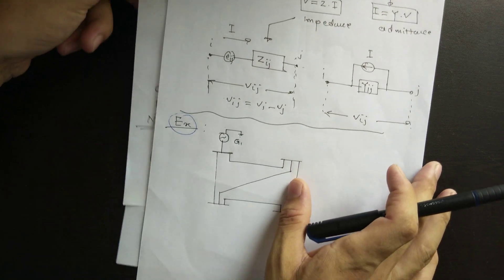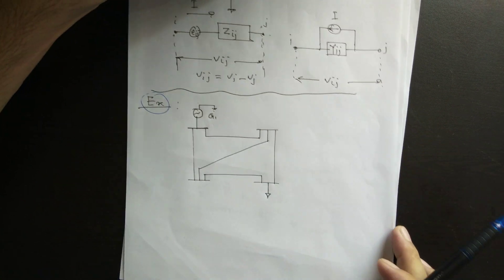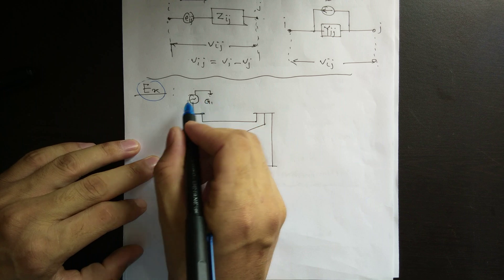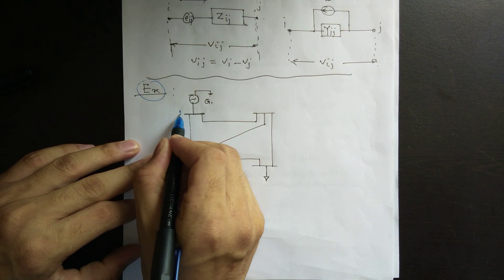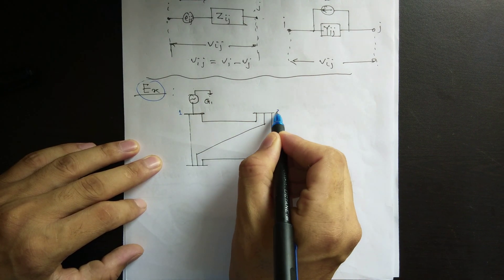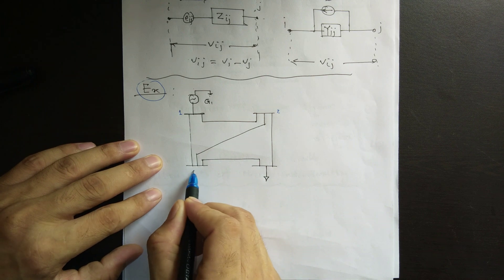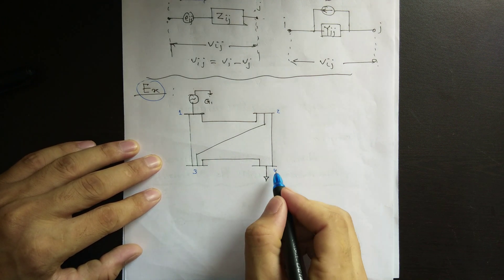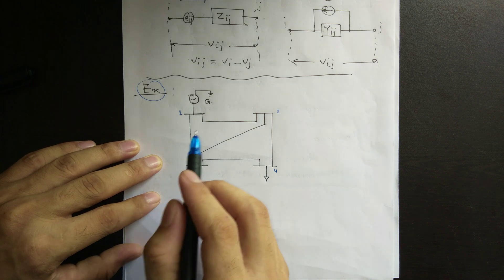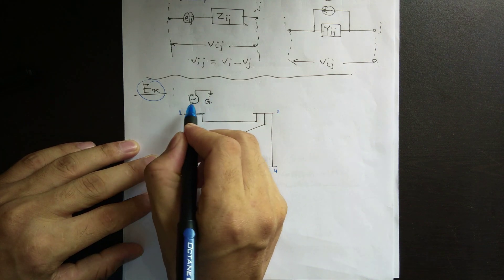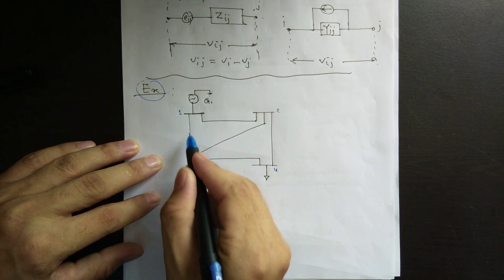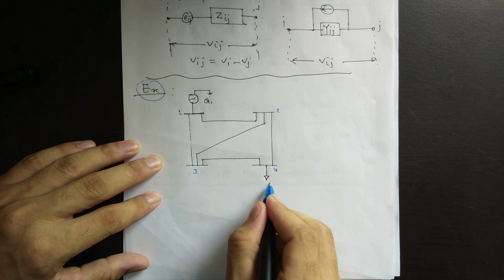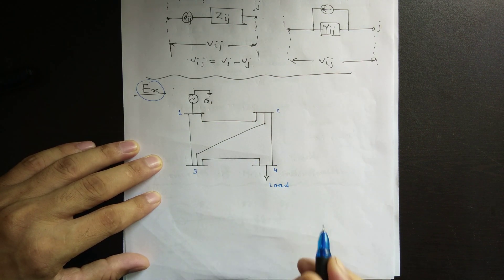Today we have an example with one generator and bus bar number one, bus bar number two, bus bar number three, and bus bar number four. We name them all. The generator is grounded; these are bus bars and these are transmission lines connecting the bus bars, and this portion is where the load is connected.